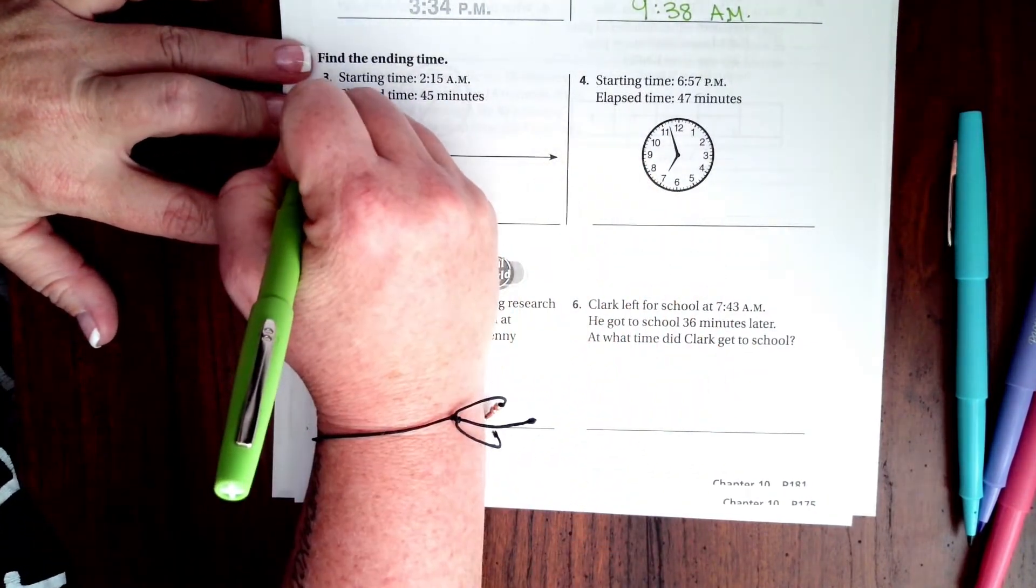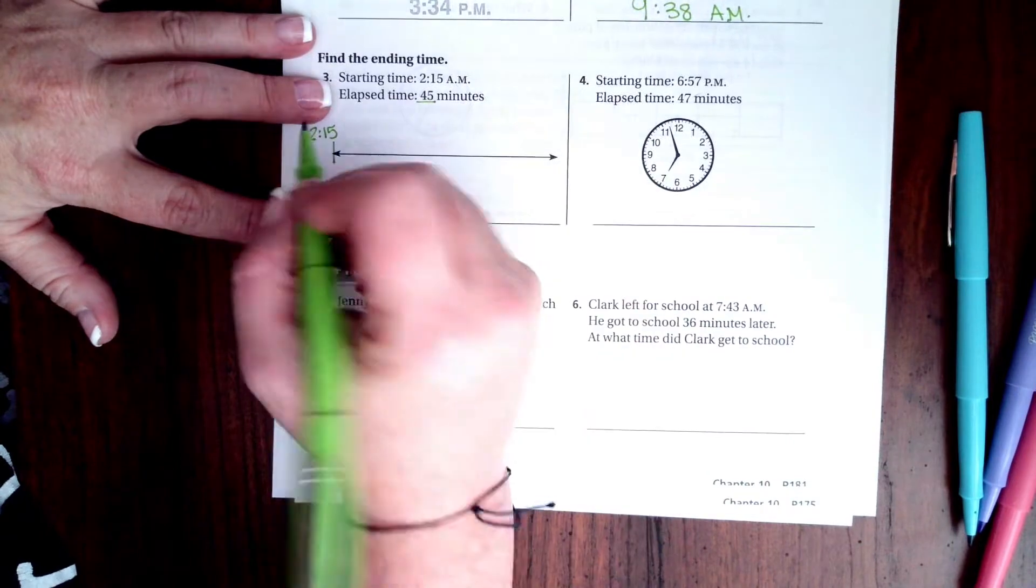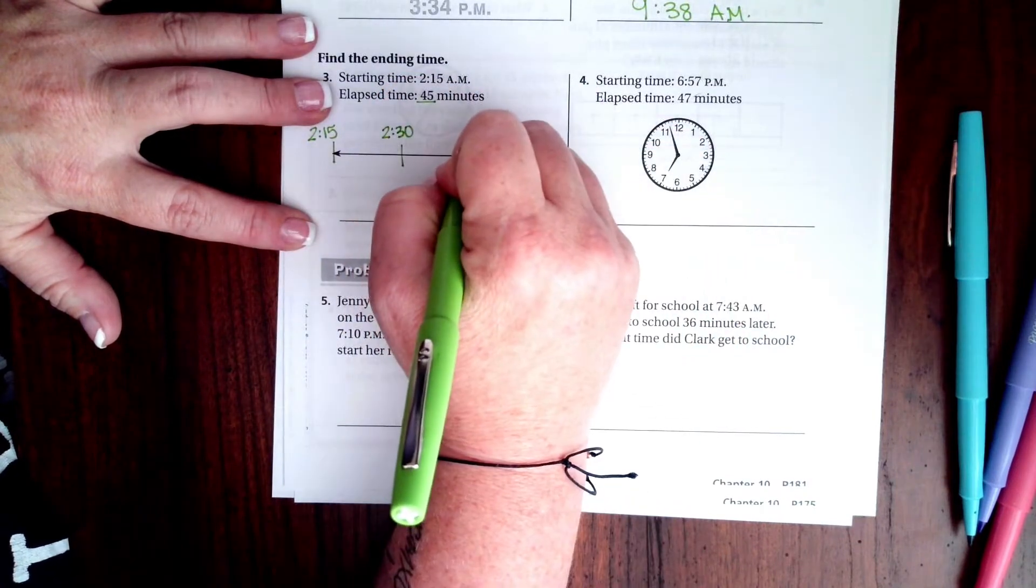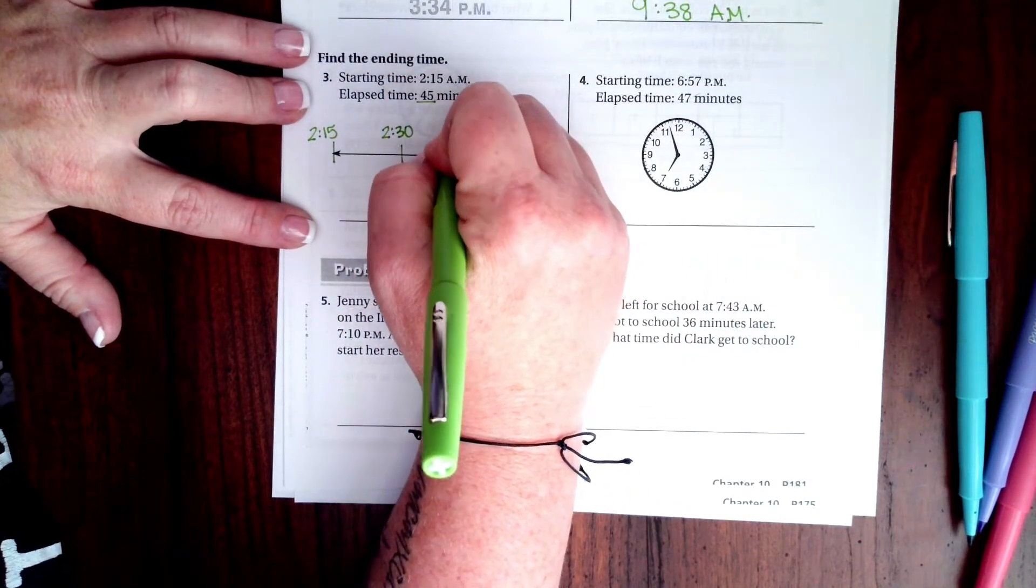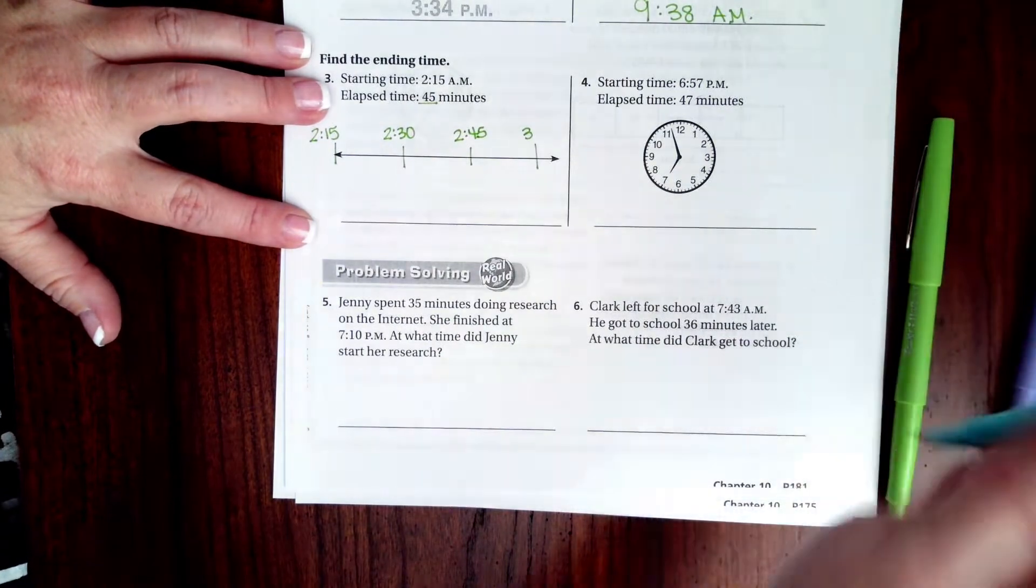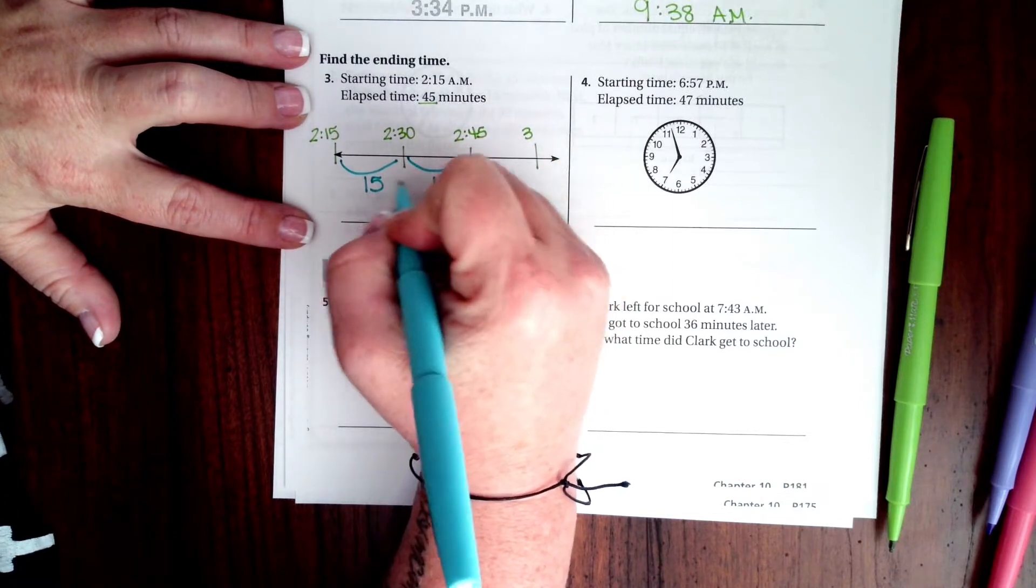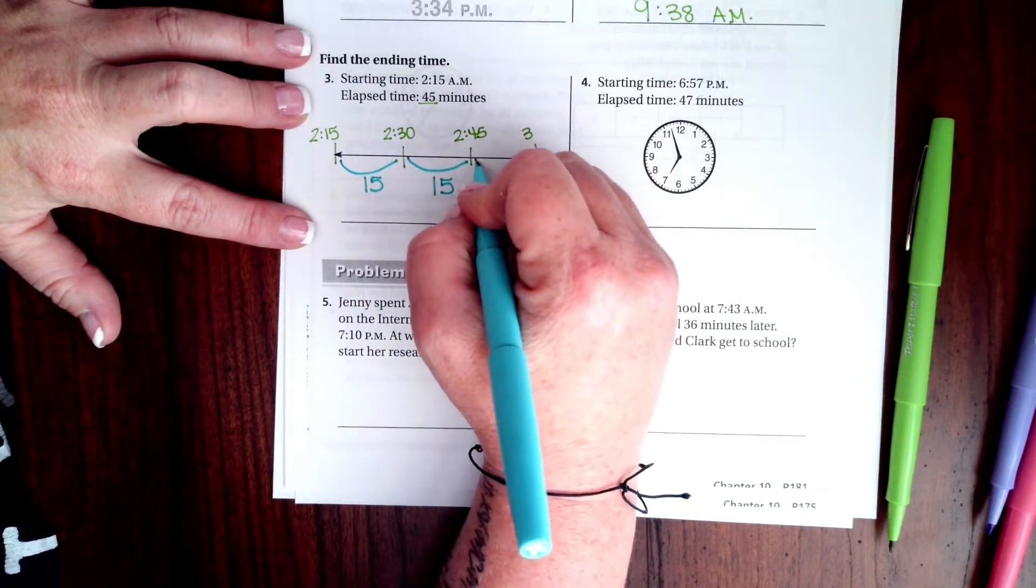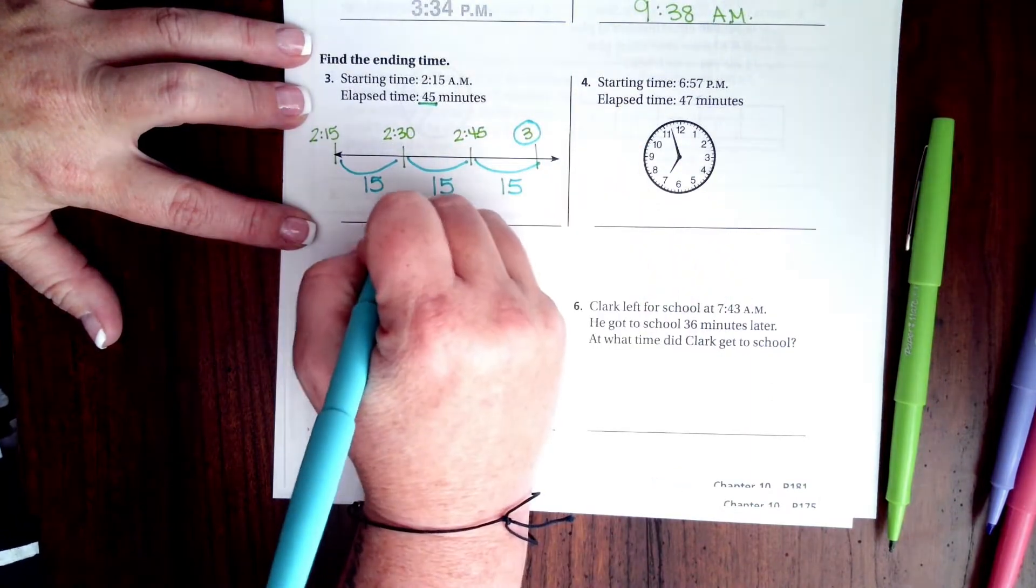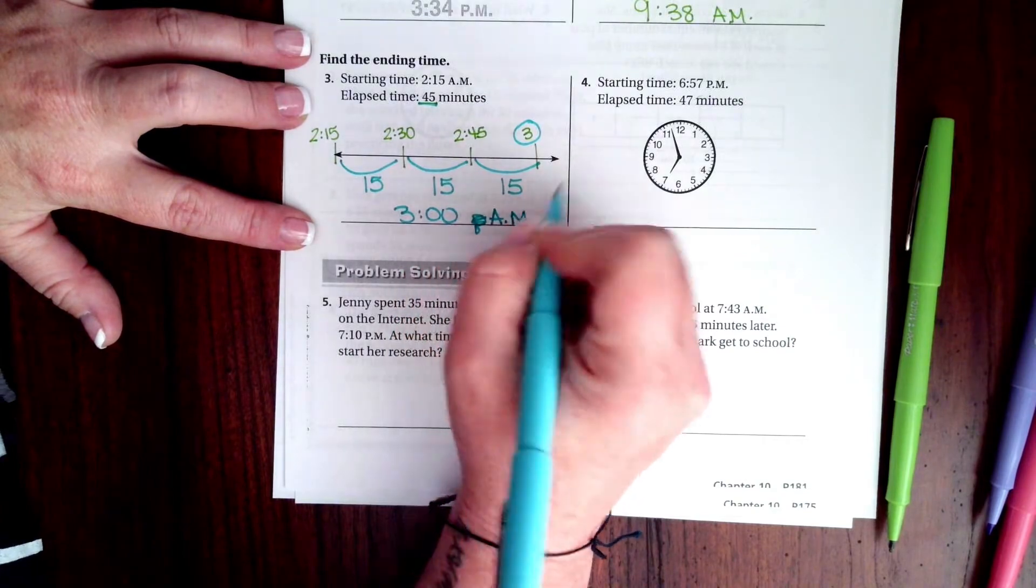So, I'm going to start at 2:15. And I need to make 45 minutes happen. So, I'm going to do one hop to 2:30, one hop to 2:45, and then one hop to 3. So, here's 15 minutes. Here's another 15 minutes. 15 and 15 is 30. So, if I do another 15 minutes, that leaves me with my 45 minutes and I wind up at 3 o'clock. So, 3 o'clock. Not PM. AM.